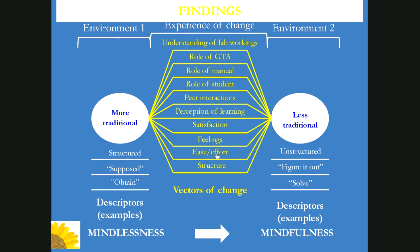The second feature of the outcome space is what we call the vectors of change — the dimensions along which the students experience change. The outcome space is common to all of the participants, regardless of their preference for one style of laboratory or the other. For instance, we have the role of the student — they all agreed, regardless of preference, that the role of the student changed, and it changed in the same way. There are other axes of our vectors of change which I won't discuss in detail here unless you have questions.